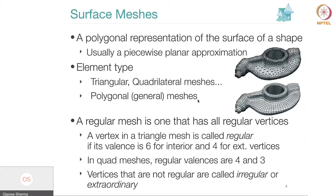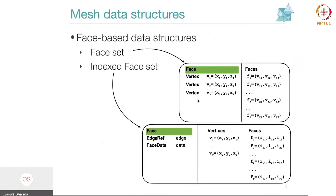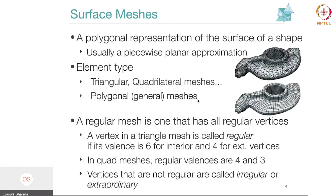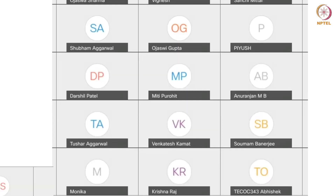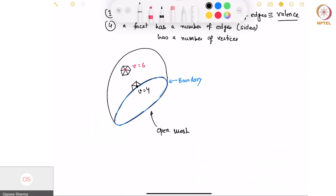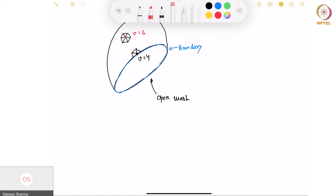That covers surface meshes — this tiling covers the boundary of the shape with nothing interior. Now let's talk about data structures to build such a mesh. A connected concept is that of a manifold, so let's quickly discuss manifold as well. There is a notion of a manifold mesh or manifold surface versus a non-manifold surface.